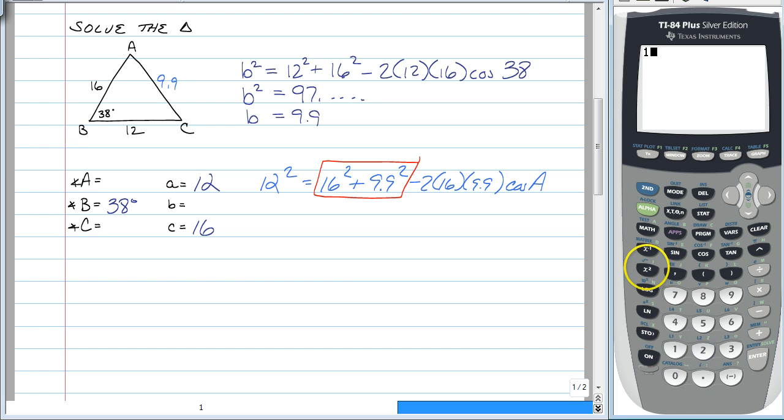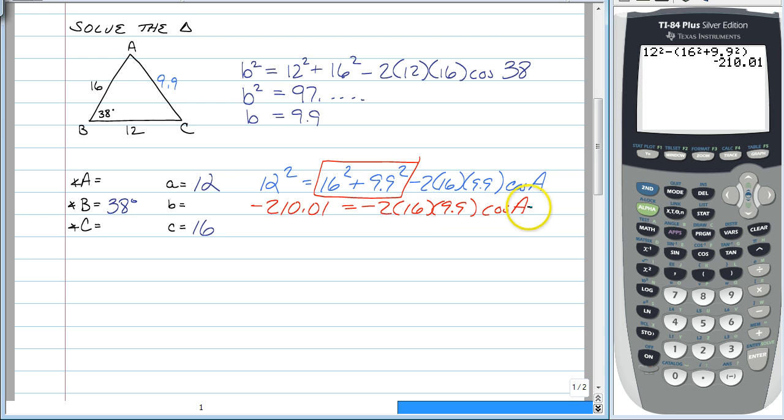You just need to do 12 squared, and then you can do minus, and then in your parentheses, you will do 16 squared plus 9.9 squared. Close your parentheses, and you're going to get negative 210.01 is equal to negative 2 times 16 times 9.9 cosine of A.